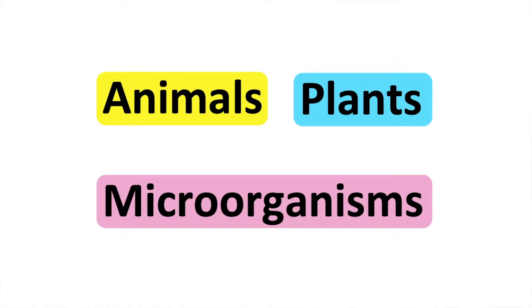For example, animals can't produce their own food. They get their energy by eating other animals or plants. Plants can produce their own food, and microorganisms are very small.